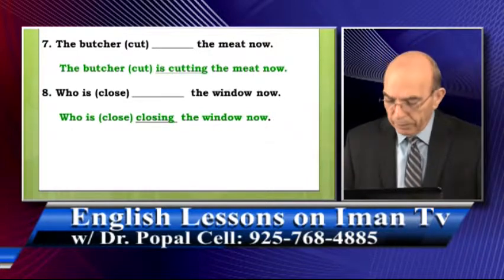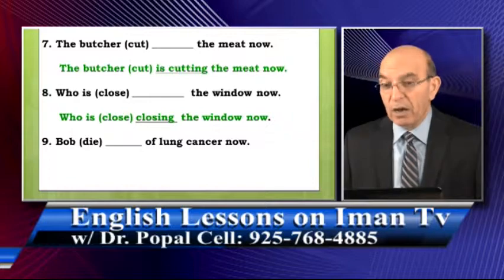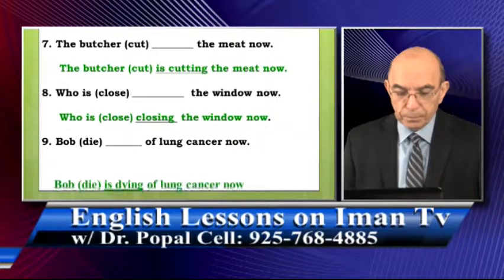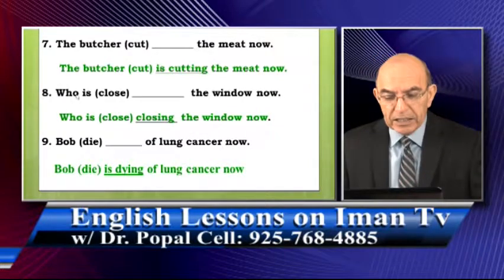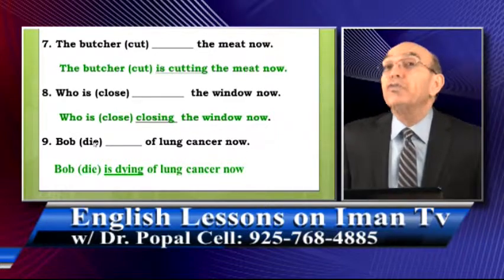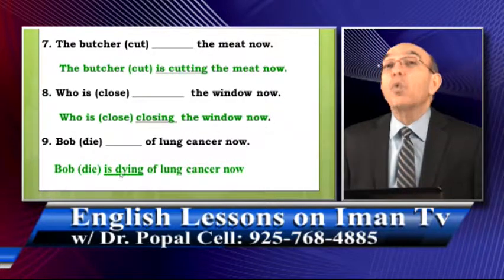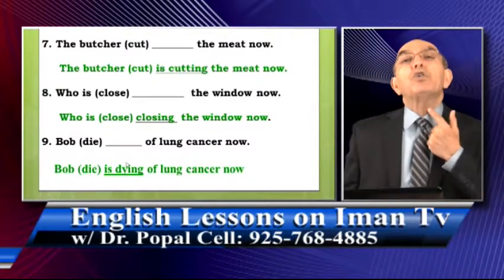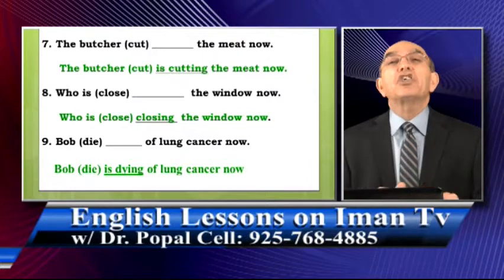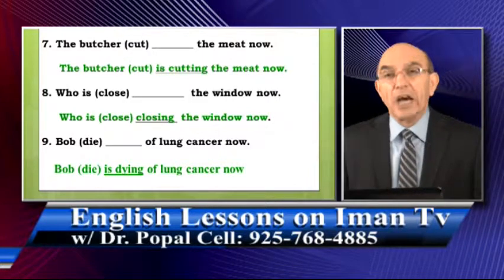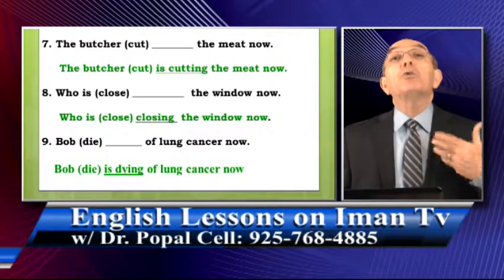Sentence number nine: 'Bob died of lung cancer now.' The correct answer is 'Bob is dying of lung cancer now.' Look at the spelling — 'die' is D-I-E, the 'ie' are two vowel sounds. When you add '-ing,' you cannot add it after 'e,' so 'ie' changes to 'y': D-Y-I-N-G — 'dying.' If you write D-I-E-I-N-G, that's not correct English. The correct spelling is D-Y-I-N-G.